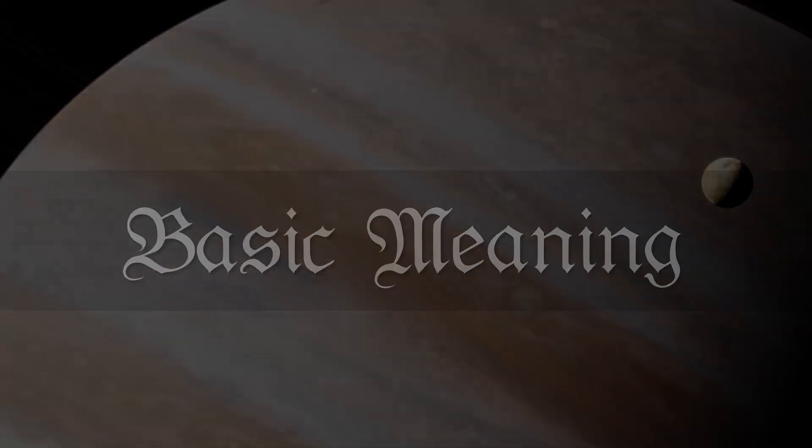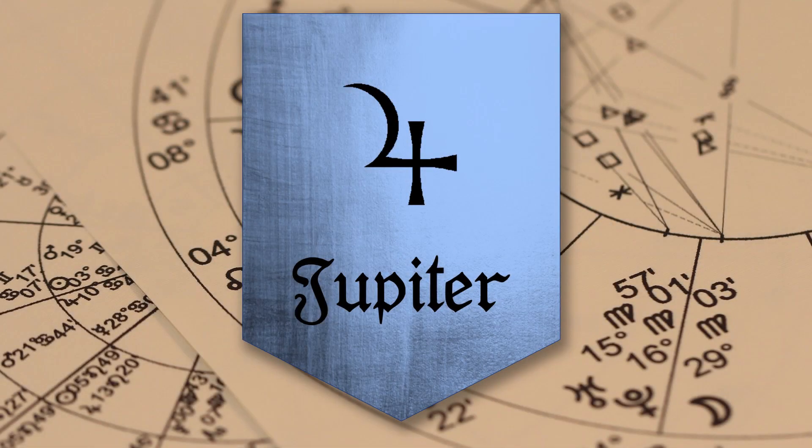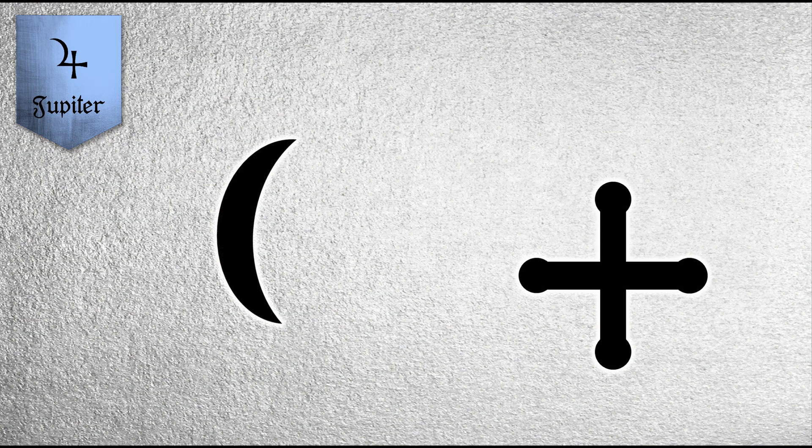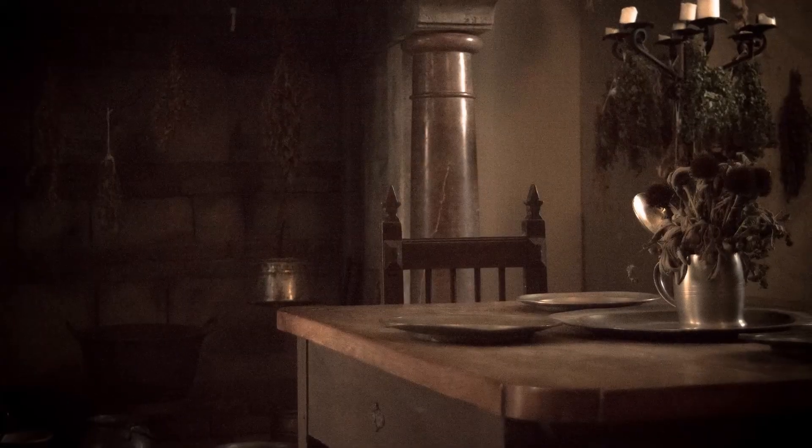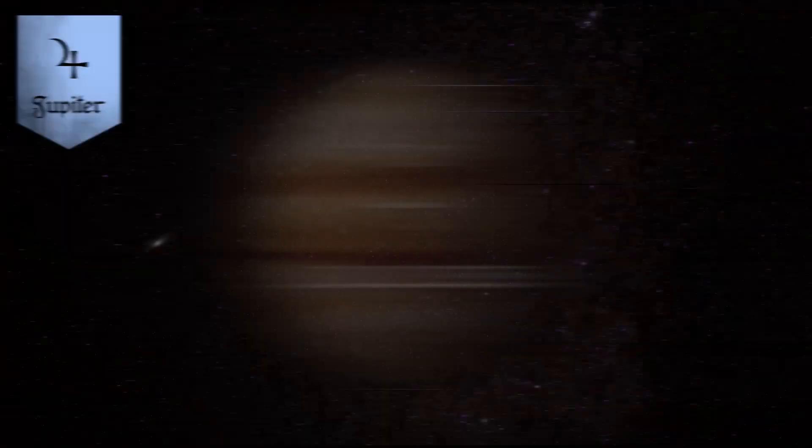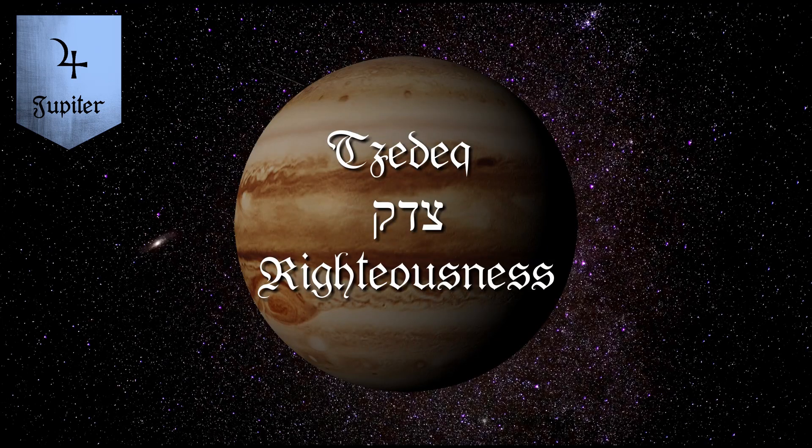Basic Meaning. The symbol which represents Jupiter in astrology is also the alchemical symbol for tin. It unites the cross with the crescent. In our horoscopes and in this video, it is also depicted in this way. Tin is one of the metals that have been used since antiquity. In Hebrew, Jupiter is called tzedek, which means righteousness.